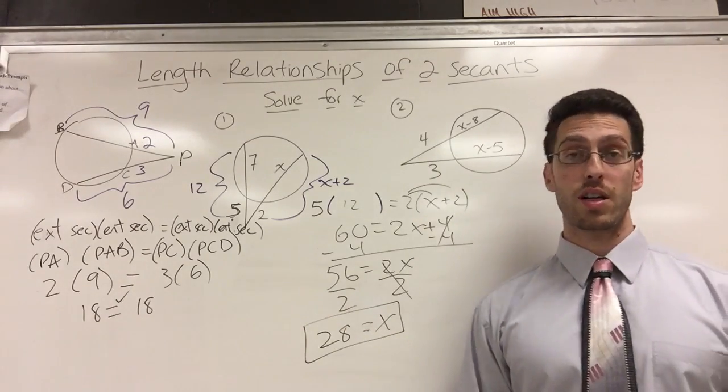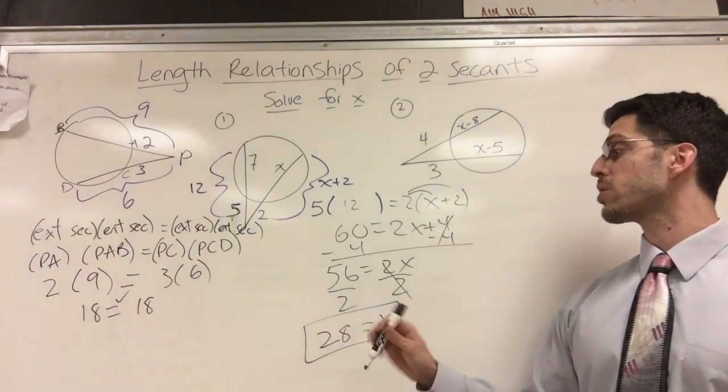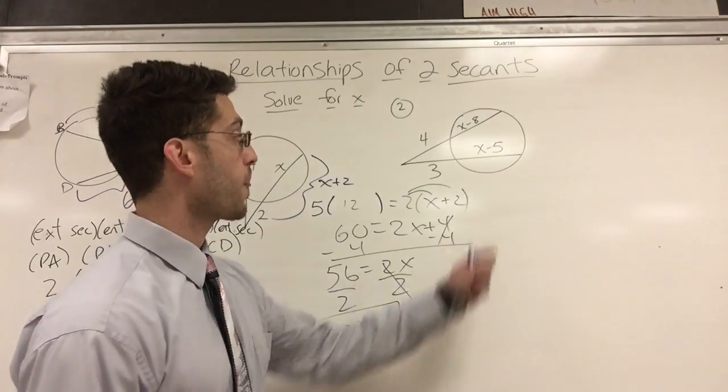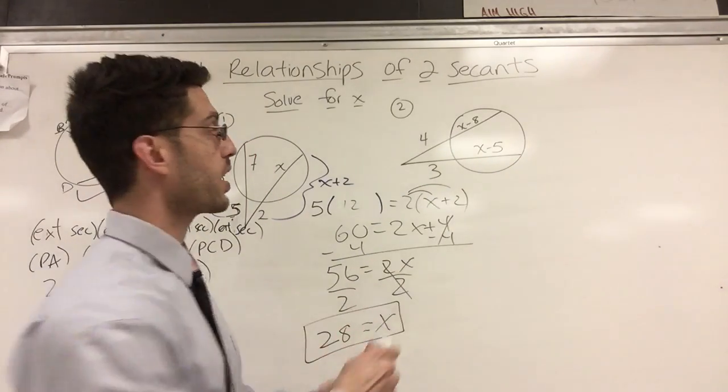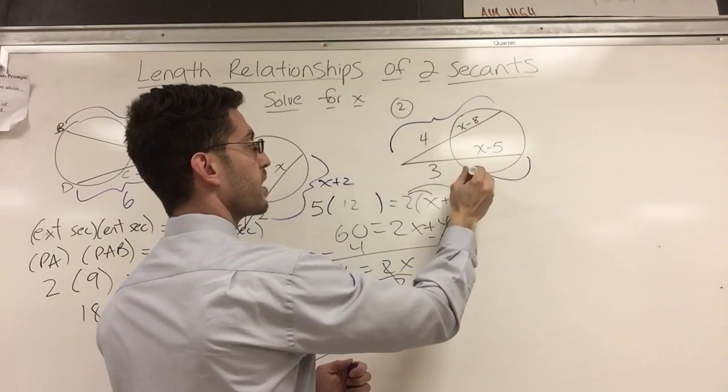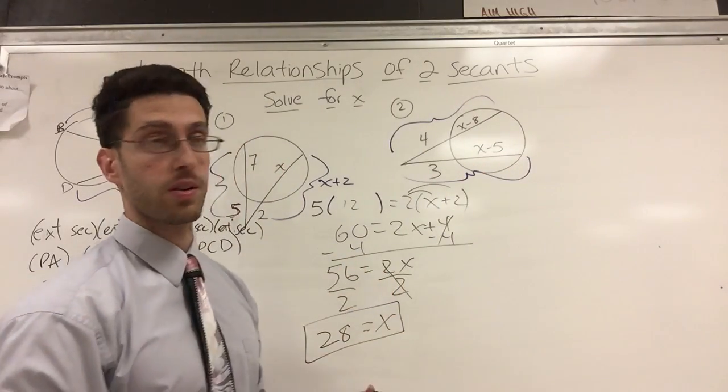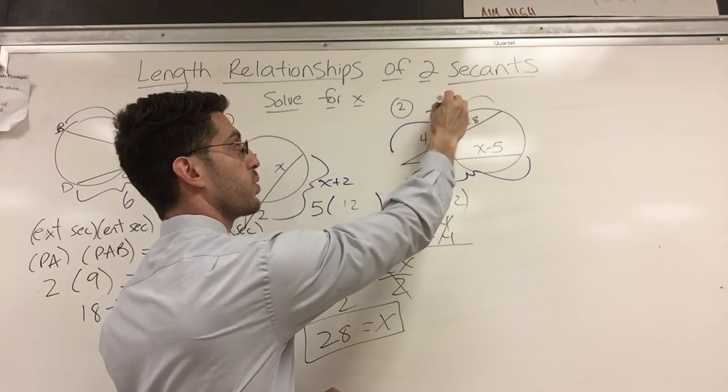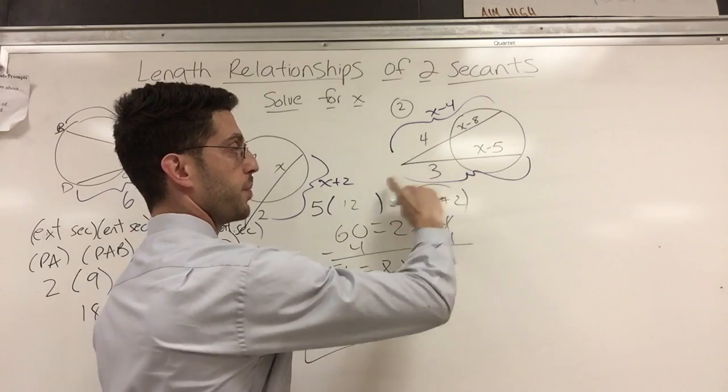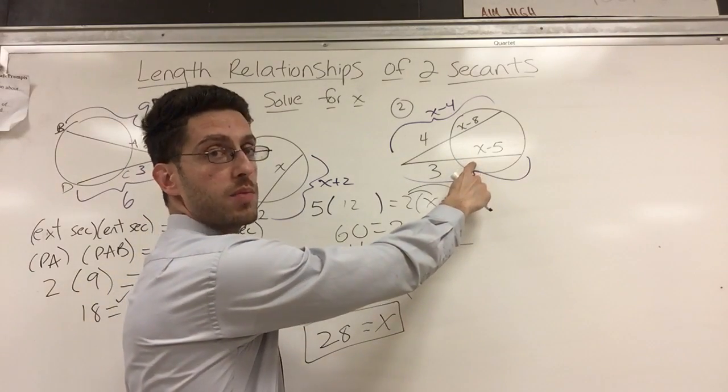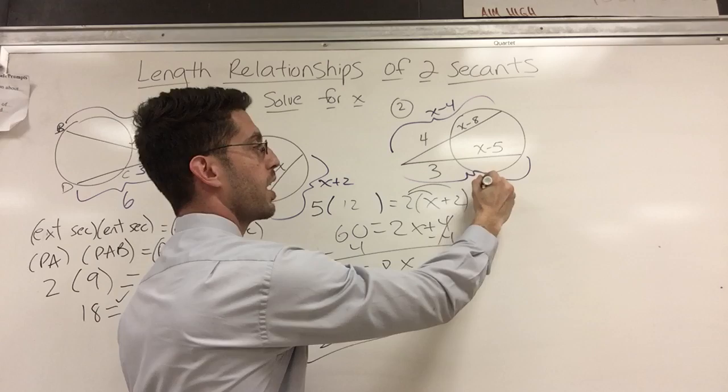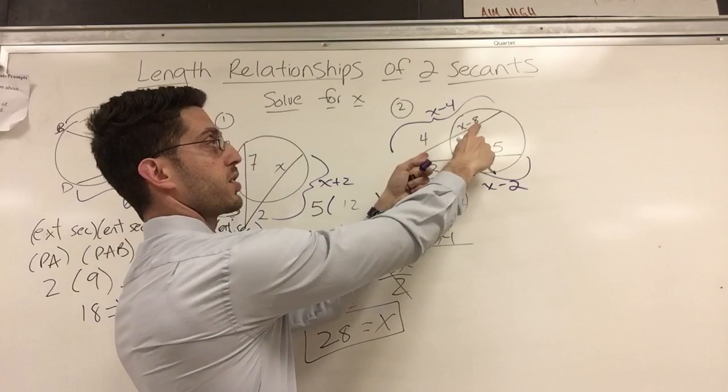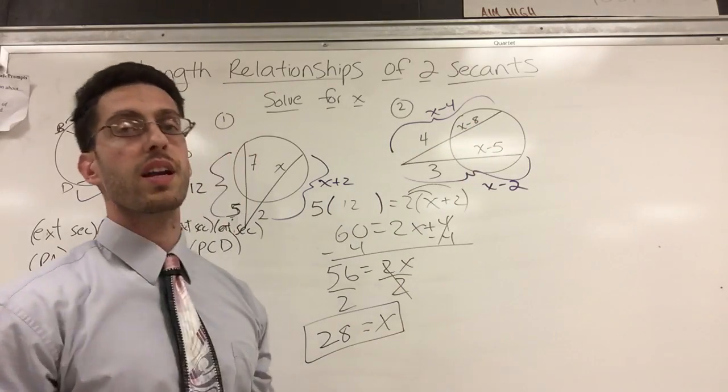And now you are done. And that was relatively straightforward. One more gets a little tricky. So here I have, again, I need the outside. And I need the other outside. So do some math here. 4 plus x minus 8 turns out to be x minus 4. 3 plus x minus 5 turns out to be x minus 2. I combine like terms. These are like terms here. These are like terms here. So once you do that, you can set it up.